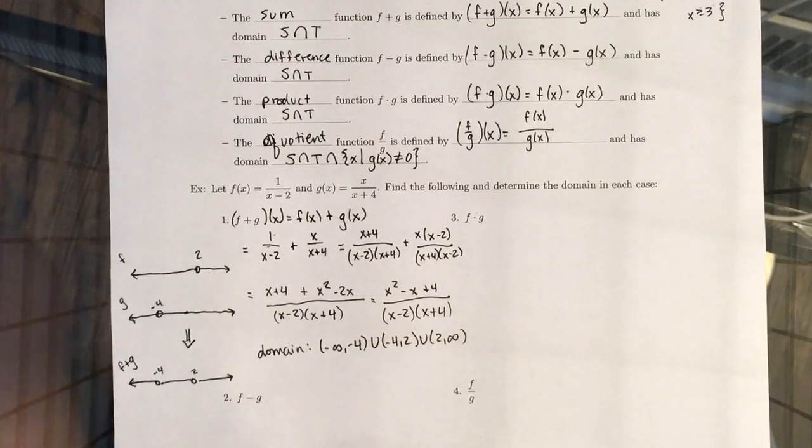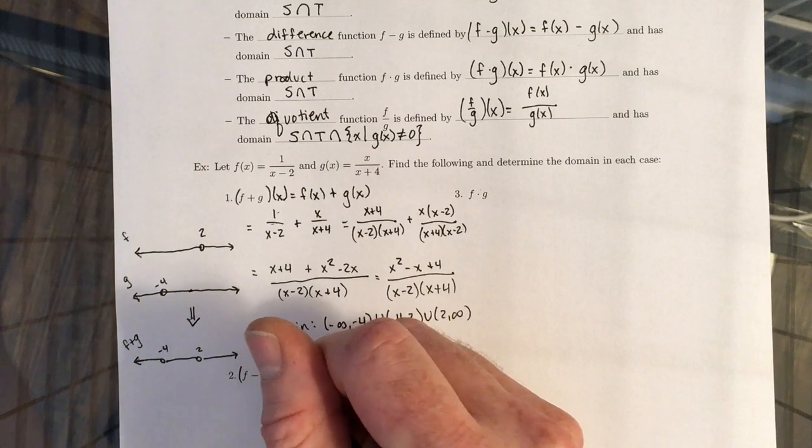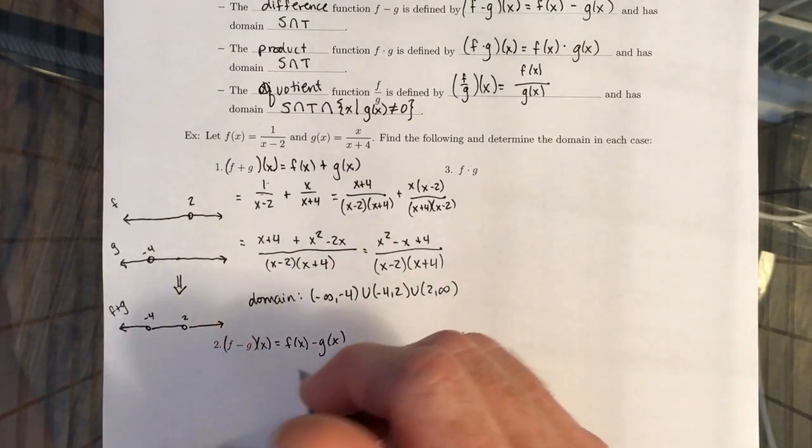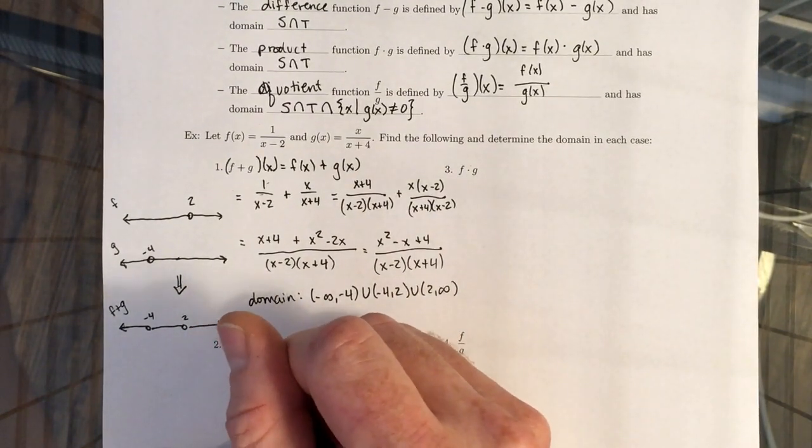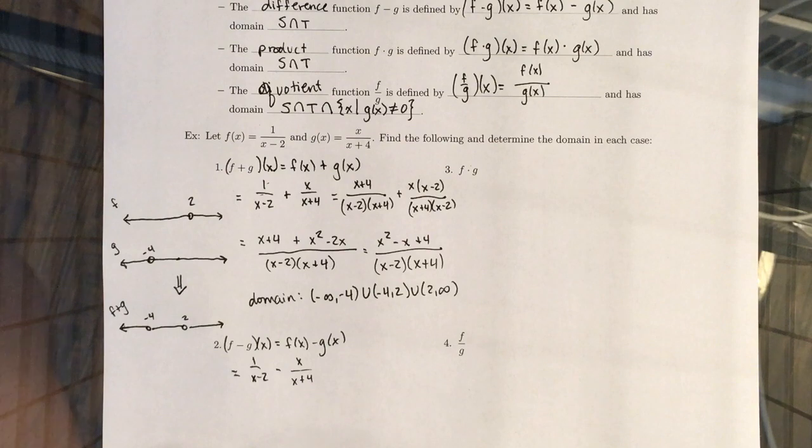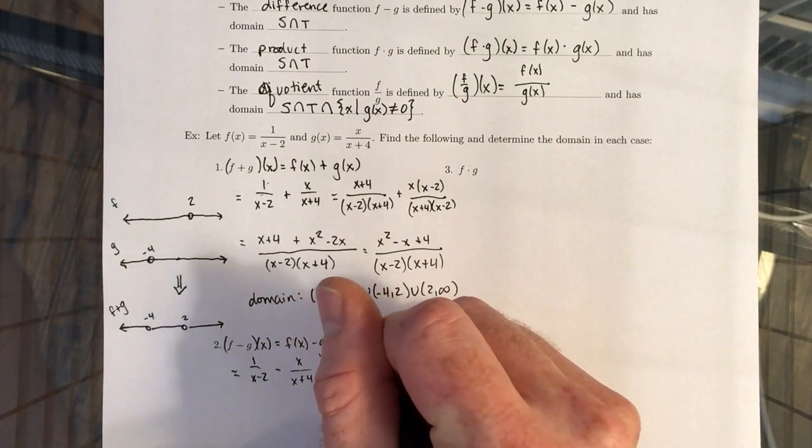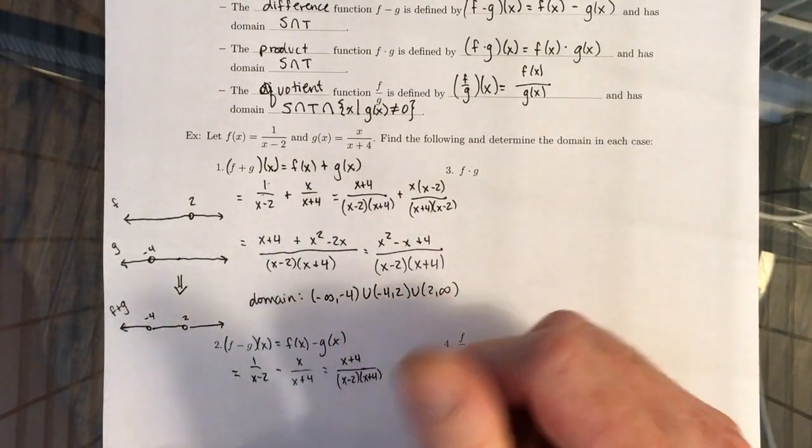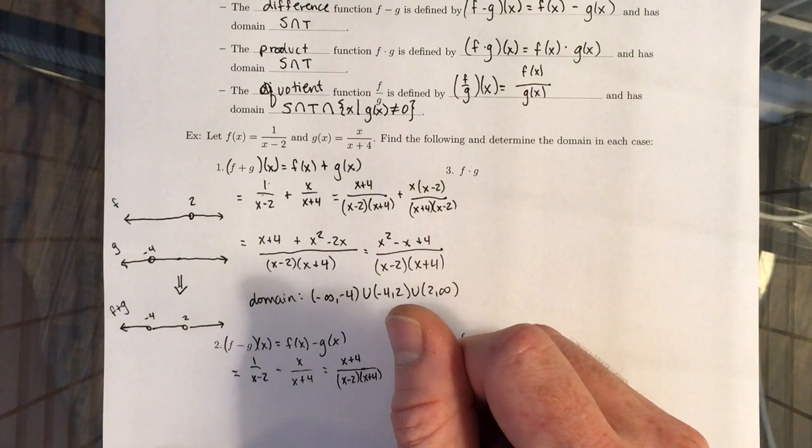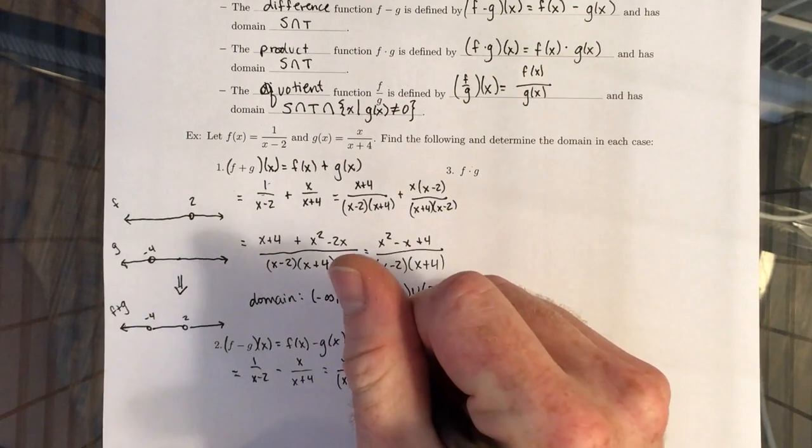Let's do the subtraction or the difference: f of x minus g of x. We're going to do the substitution first. We already talked about the common denominators that we have to get, so we're going to have x plus 4 over here, x minus 2. The only difference between part 1 and part 2 is there's a minus in between now.